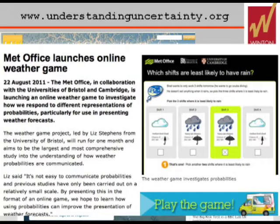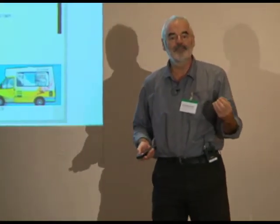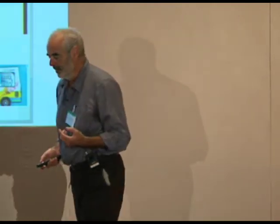Another study: the Met Office has been doing a randomized trial of different ways of communicating uncertainty about weather forecasts — showing, for example, how far an umbrella is open to represent the chance of rain. This is one of the things we've been testing. Again, a randomized experiment — 10,000 people have done it online over a month.